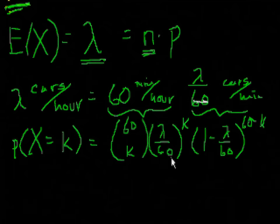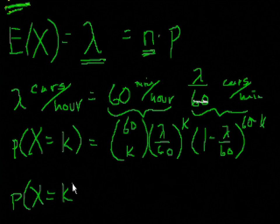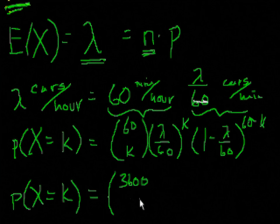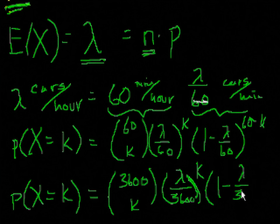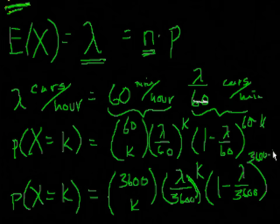Instead of dividing it into minutes, why don't I divide it into seconds? So the probability that I have k successes, instead of 60 intervals, I'll do 3,600 intervals. And so the probability of k successful seconds, so a second where a car is passing at that moment, out of 3,600 possible seconds, so that's 3,600 choose k, times the probability that a car passes in any given second. Well, that's the expected number of cars in an hour divided by the number of seconds in an hour. And we're going to have k successes. And then we're going to have the failures, the probability of failure. And you're going to have 3,600 minus k failures.